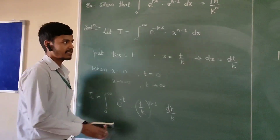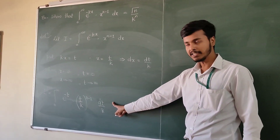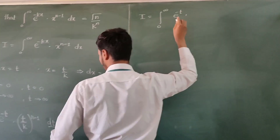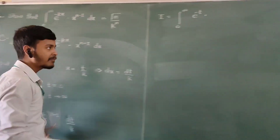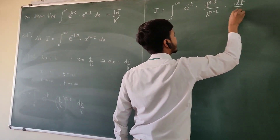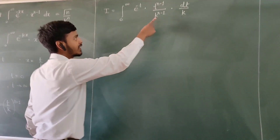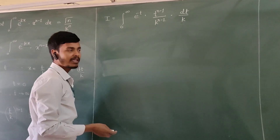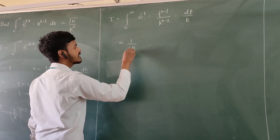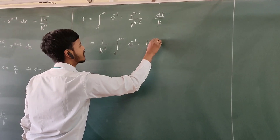Now let us simplify this. On simplification, i equals the integration from 0 to infinity of e to the power minus t into t to the power n minus 1 upon k to the power n minus 1, times dt by k. Applying the laws of exponents, k to the power n minus 1 multiplied by k gives k to the power n. Since we are integrating with respect to t, we can take k to the power n outside. So this becomes 1 upon k to the power n times the integration from 0 to infinity of e to the power minus t into t to the power n minus 1 dt.